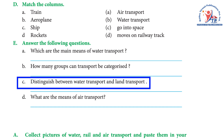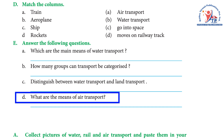C) Distinguish between water transport and land transport. Answer: water transport refers to the movement of vehicles on water, for example the ship; land transport refers to vehicles that move on land, for example the bus. D) What are the means of air transport? Answer: aeroplanes and helicopters are the fastest means of air transport.